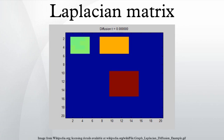Given a simple graph G with N vertices, its Laplacian matrix is defined as L = D - A, where D is the degree matrix and A is the adjacency matrix of the graph. In the case of directed graphs, either the in-degree or out-degree might be used, depending on the application.